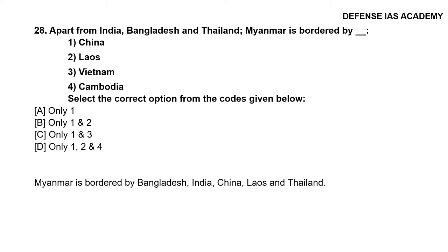Question 28: Apart from India, Bangladesh and Thailand, Myanmar is bordered by: 1. China, 2. Laos, 3. Vietnam, 4. Cambodia. The correct answer is option B, only 1 and 2. Myanmar is bordered by Bangladesh, India, China, Laos and Thailand.